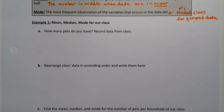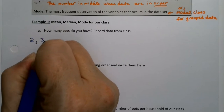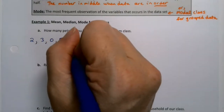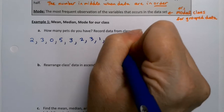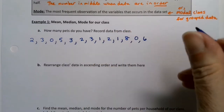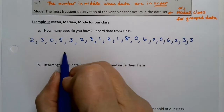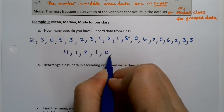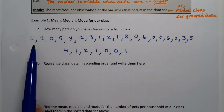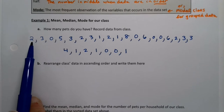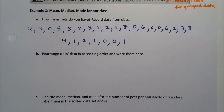Now let's look at the mean, median, and mode for our class data. I asked a class full of students how many pets they had, and these were their responses. So each student reported their number of pets — two pets, three pets, no pets, and so on.